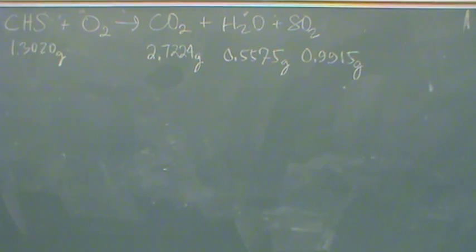So from the text, this says the solvent is carbon, hydrogen, sulfur compound, yield CO2, H2O, and SO2 at these amounts on the board. What's the empirical formula?